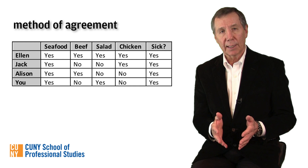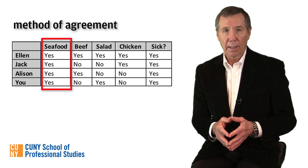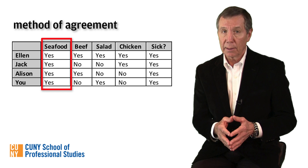As you can see, everyone got sick, and the only thing that everyone consumed was seafood. By applying the rule of agreement, we can infer that seafood was very probably the cause of the illness.